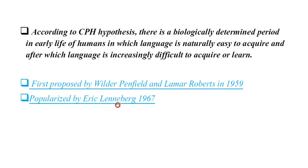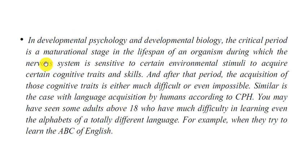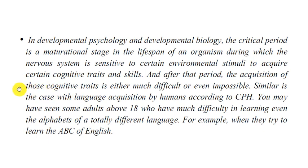It was later popularized by Eric Lenneberg in 1967. In developmental psychology and developmental biology, the critical period is a maturation stage in the lifespan of an organism during which the nervous system is sensitive to certain environmental stimuli to acquire certain cognitive traits and skills. After that period, the acquisition of those cognitive traits is either much more difficult or even impossible.